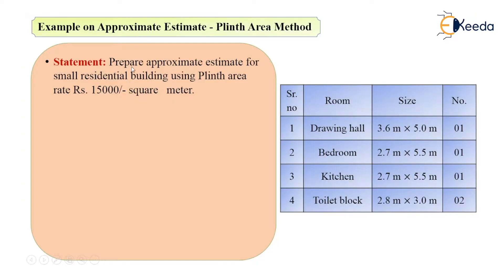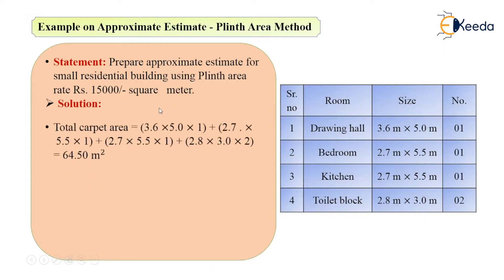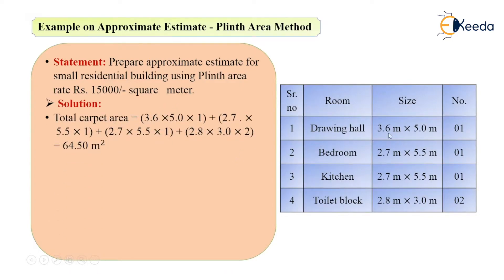The problem statement says: prepare an approximate estimate for a small residential building using a plinth area rate of 15,000 per square meter. The drawing hall size is 3.6 by 5 meter and there is 1 drawing hall. The bedroom size is 2.7 by 5.5 meter, number of rooms is 1. The kitchen size is 2.7 by 5.5 meter, number of kitchens is 1. And there are two toilet blocks of 2.8 by 3 meter.